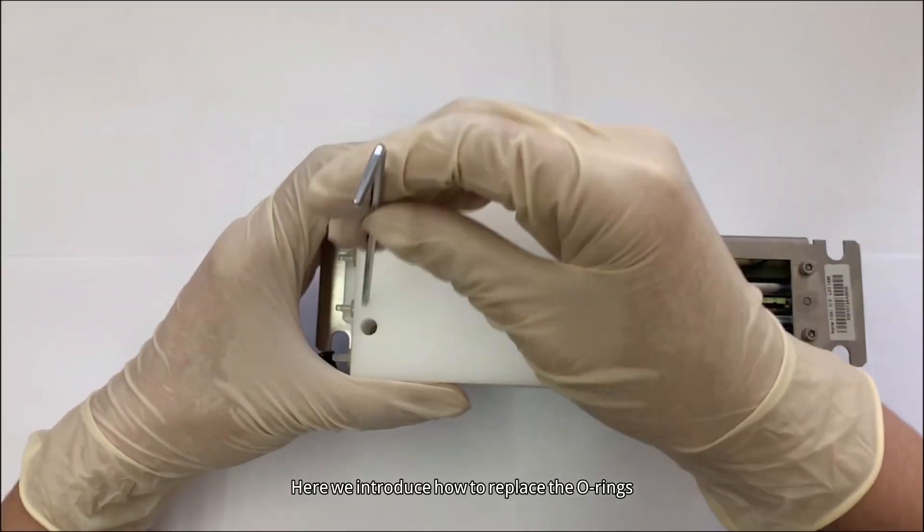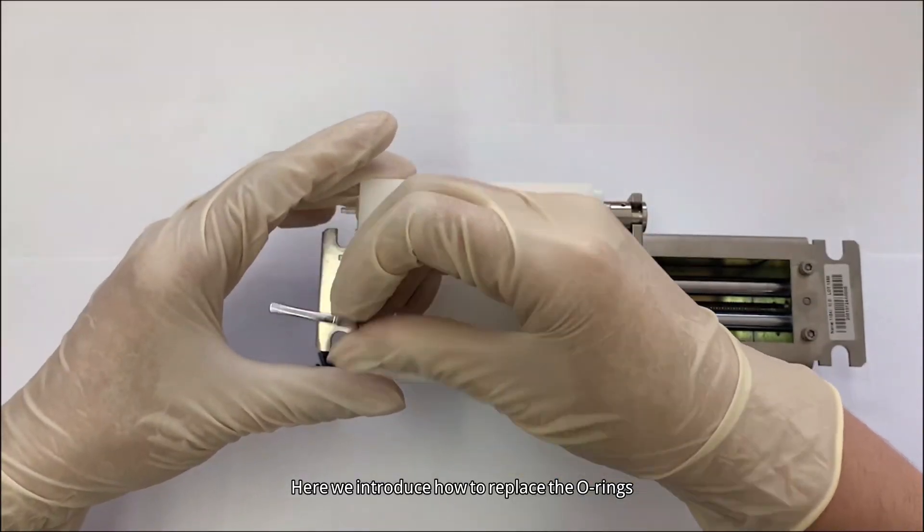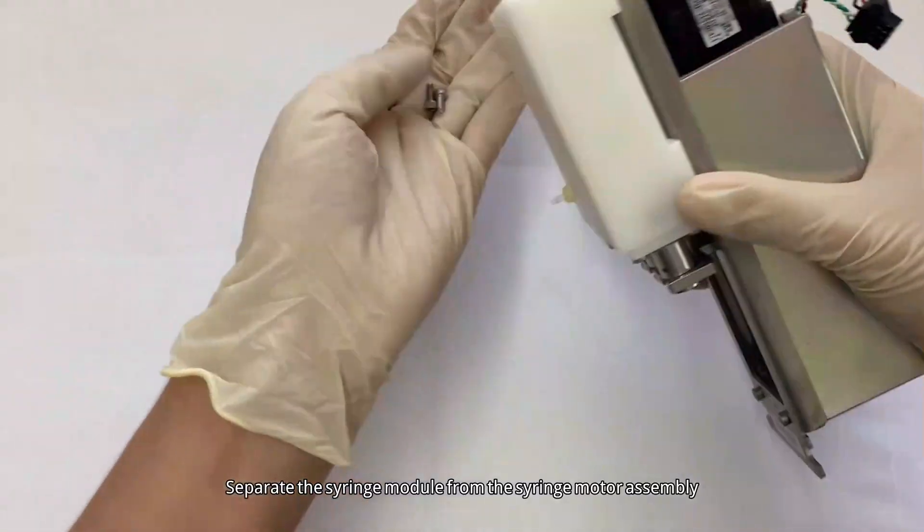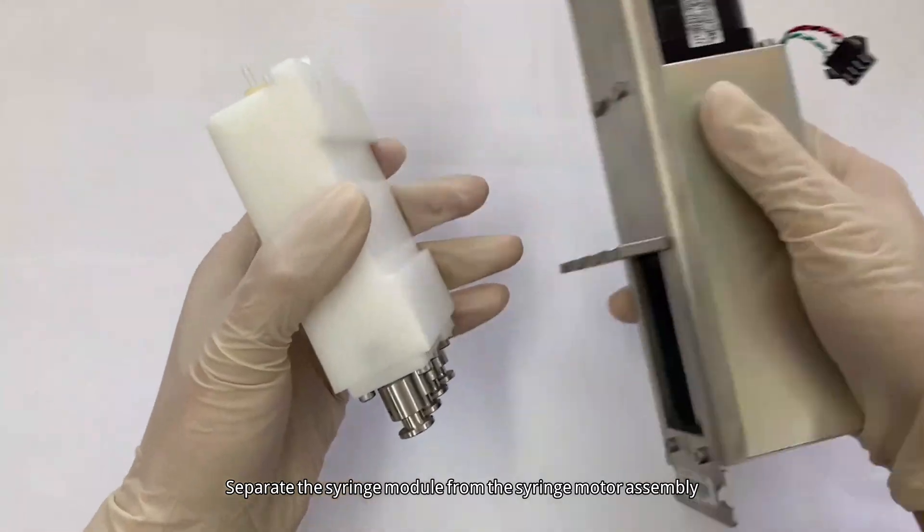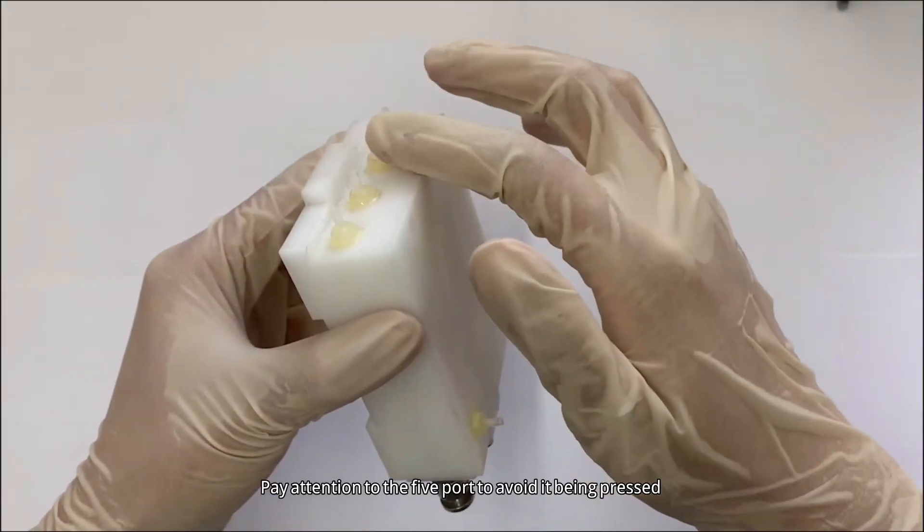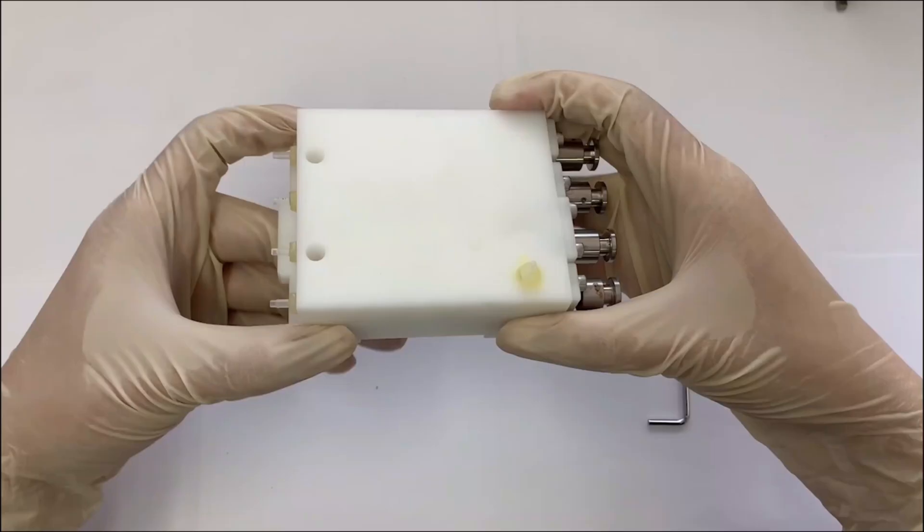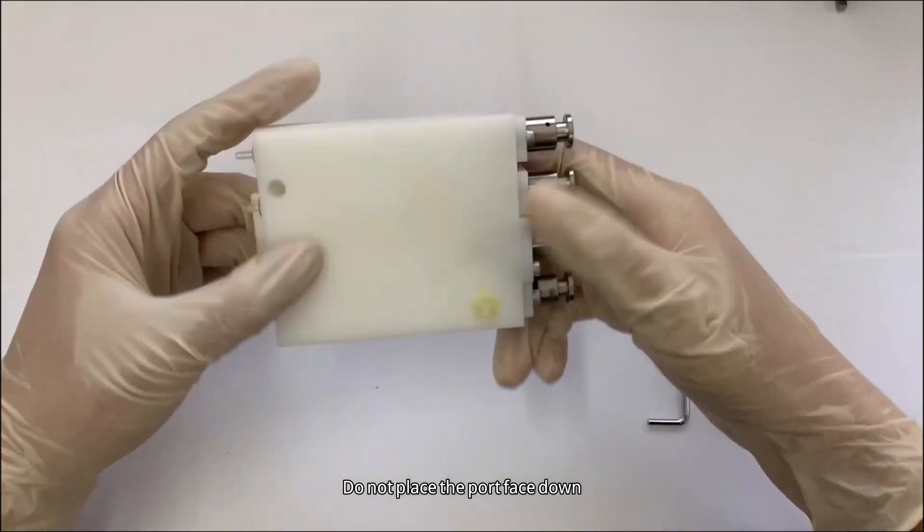Here we introduce how to replace the O-rings. Separate the syringe module from the syringe motor assembly. Pay attention to the 5-port to avoid it being pressed. Do not place the port face down.